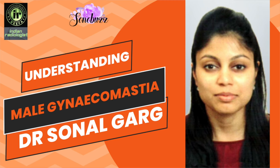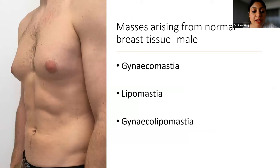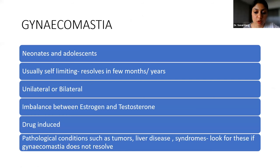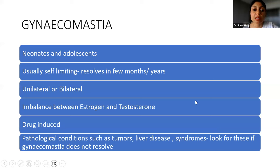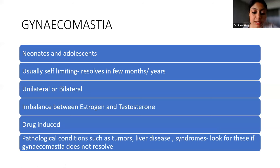Now we move on to the masses arising from normal breast tissue in the male. There are three conditions: gynecomastia, lipomastia, and gynecolipomastia. Gynecomastia is the most common thing that presents in clinical practice. Gynecomastia is normal at two stages of development — in neonates and at adolescent age.